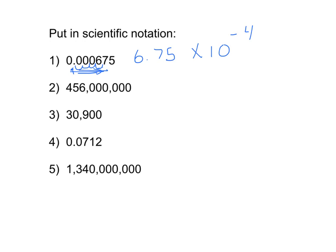For number two, the one non-zero digit in front of the decimal will be a four. So we'll have four point five six times ten. Here's where the decimal starts, and we need to count how many places we move it in order to get it right behind the four. So we're going to move it one, two, three, four, five, six, seven, eight places. So the exponent will be eight, and it will be positive because we are moving the decimal to the left. We want to multiply four point five six by a large number in order to get a large number.